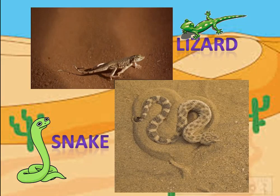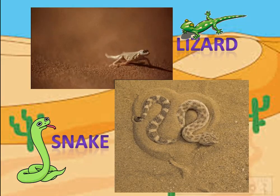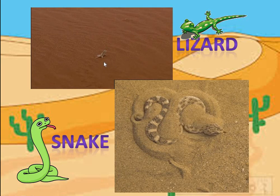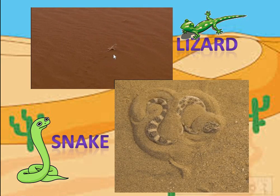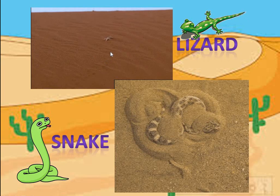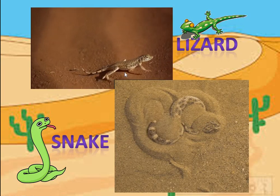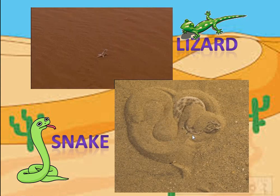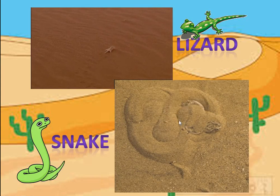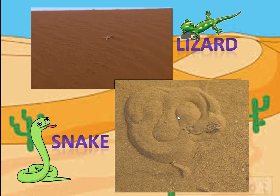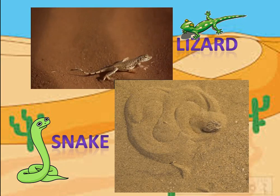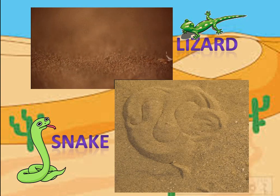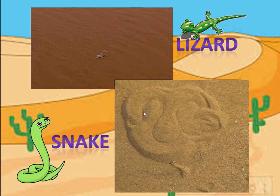Look here. You can now see how the lizard walks to protect its body from heat. Similarly, watch how the snake goes inside the sand to protect its body from the hot sand — it has just hidden itself under the sand.